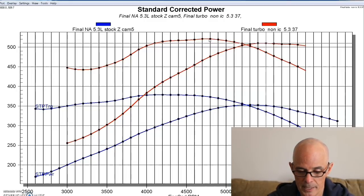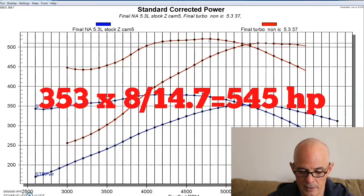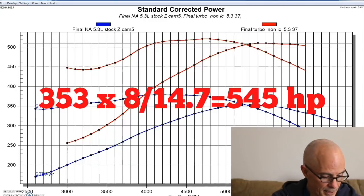So we take 8, divide it by 14.7, 54% plus one, and then we multiply that by our original power output of 353. This combination should be ideally making somewhere in the 545 horsepower range.